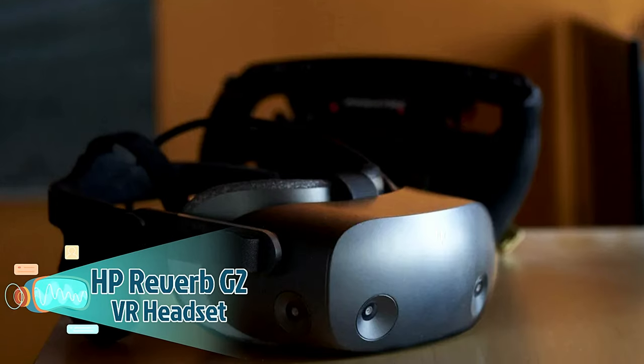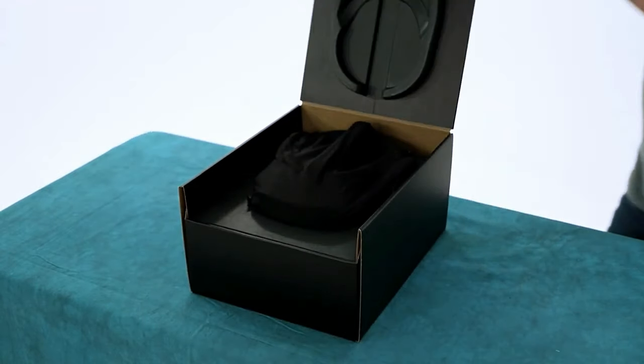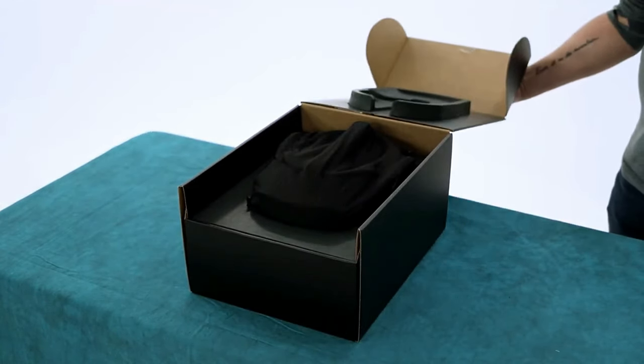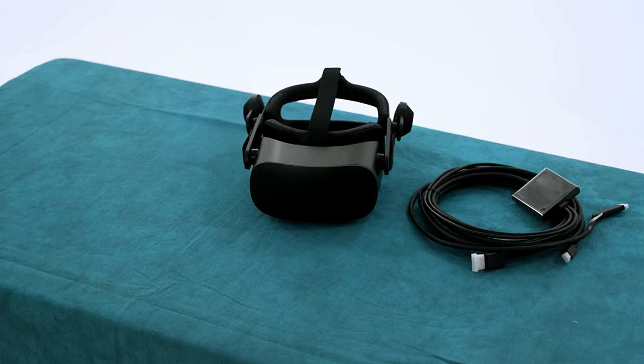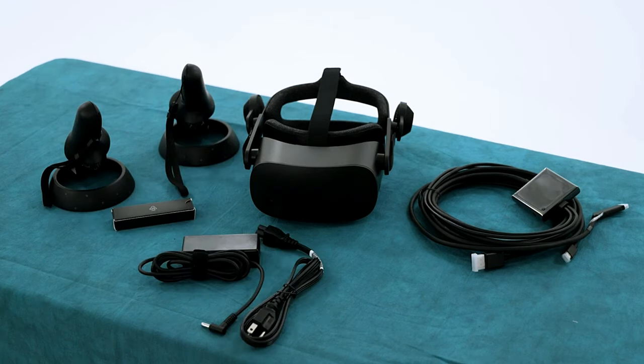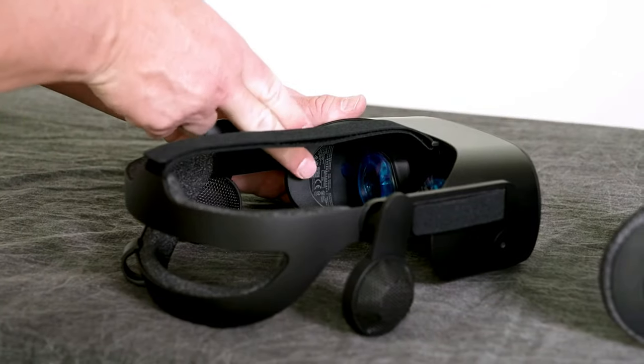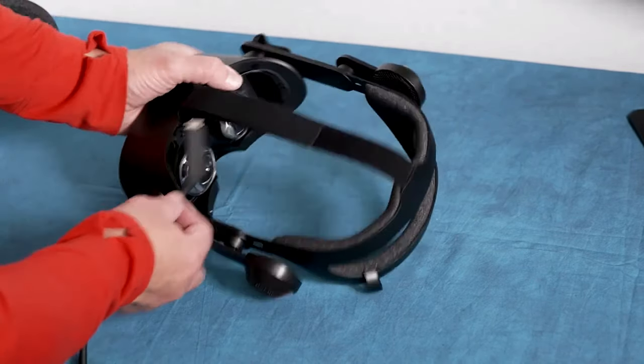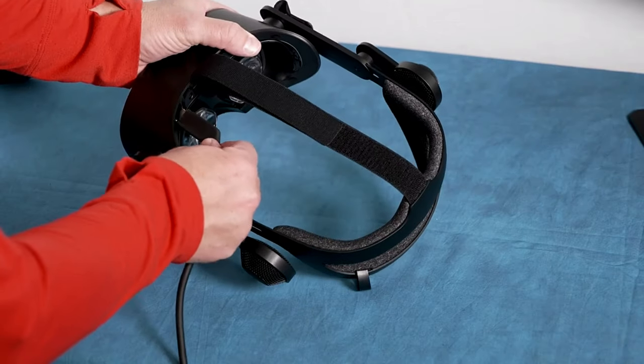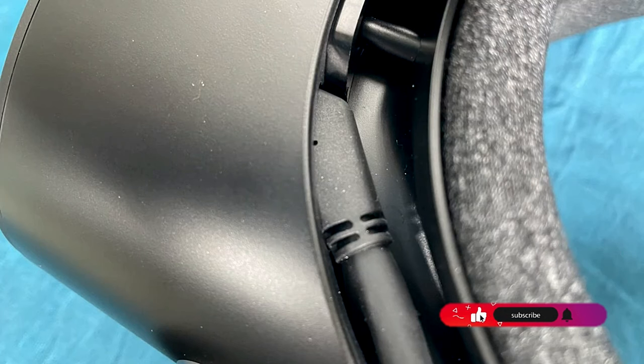Number 2: HP Reverb G2 VR Headset. When you put on the HP Reverb G2 VR Headset, you can dive into a virtual reality experience that is like nothing else. This VR headset is meant to take your virtual experiences to a whole new level by combining realistic images with immersive soundscapes. The package comes with the HP VR headset, a 6M cable that works with desktop and mobile PCs, two motion controllers, a DisplayPort to Mini DisplayPort adapter, a power adapter, and clear directions on how to set it up. This makes sure that you have everything you need to start using VR right away.